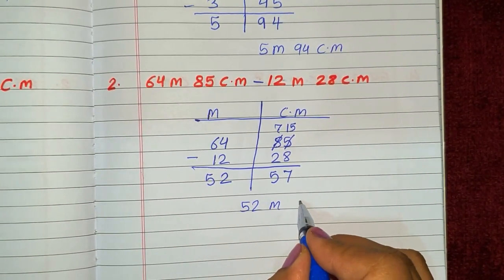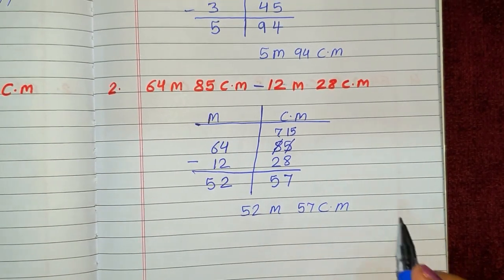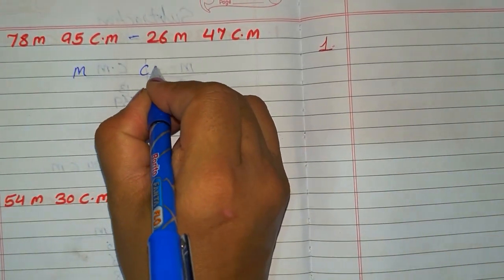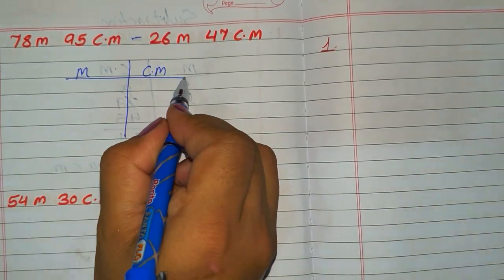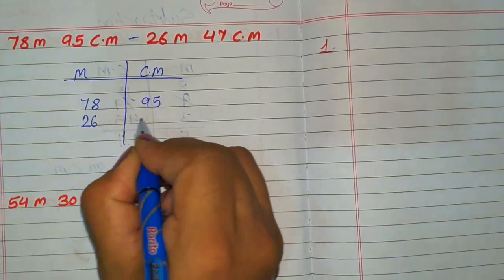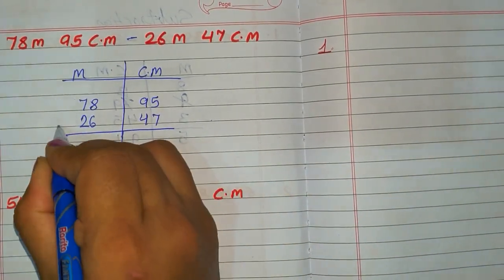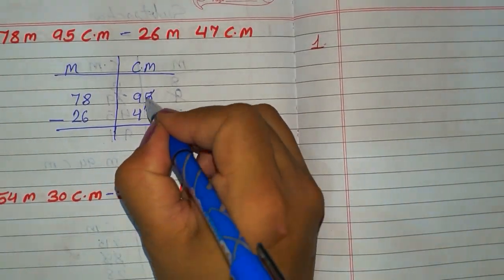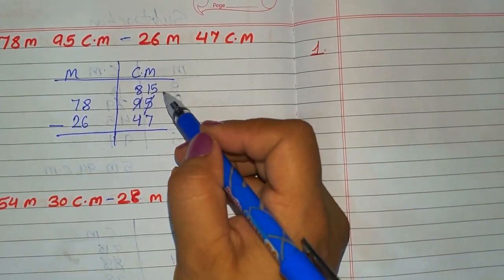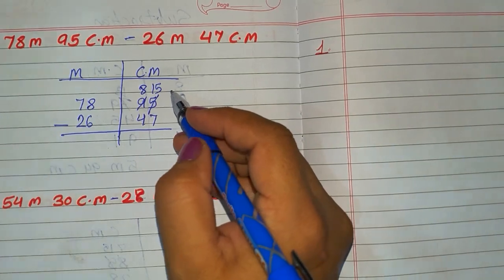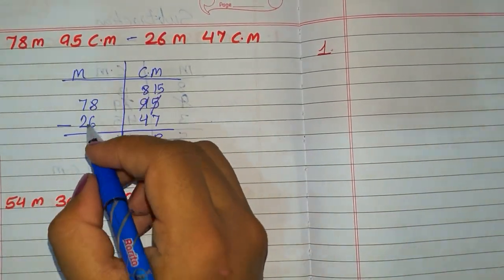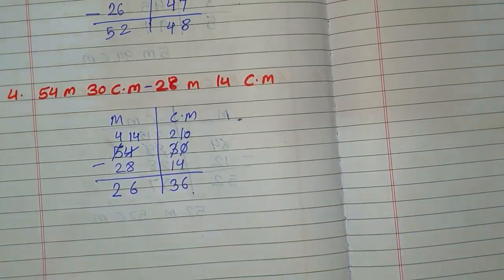Now the next question: 78 meter and 95 centimeter minus 26 meter and 47 centimeter. We make the column: 78 and 95, then 26 and 47. Here 7 is smaller than the digit above, so we borrow — the number becomes 15. 15 minus 7 is 8, 4 minus 4 is 0 (wait: 8 minus 4 is 4), 8 minus 6 is 2, and 7 minus 2 is 5.